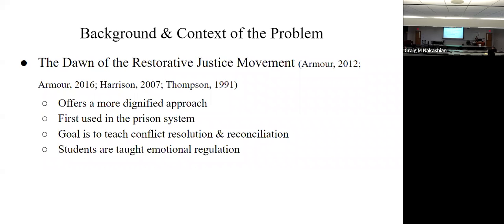Along comes the restorative justice movement, which comes out of the prison system of all places. School districts latched onto this and decided they wanted to relook at zero tolerance policies and find some other way to help with the kiddos. It is a more dignified approach to student discipline. In the prison system, it's a conflict resolution thing — we bring together the victim and the offender, repair the harm, and restore that relationship. The schools decided to try this. Another component was emotional regulation — kids are so quick to just lose it and pop off with no emotional regulation. Within the restorative justice movement, kids are taught that component that they're missing.